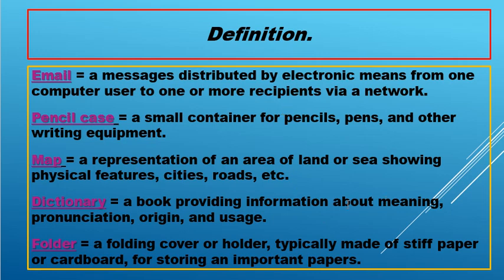How was your land, how was the length of your land, how big it is, or the sea — the water. Physical pictures: a city, how many cities you have, the roads, giving directions on how to go to your place, how many roads you have in your place, and so on. So the best example for map is Google Maps — you use that one when you're going to travel.